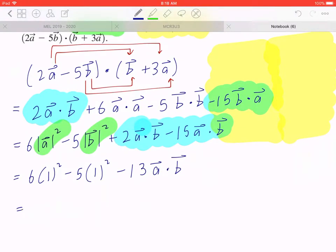If you collect like terms, 2 minus 15 is going to be -13a · b. If you keep going, by collecting like terms, 6 minus 5 is going to give you 1 minus 13. By definition, a · b equals the magnitude of a times the magnitude of b cosine theta.